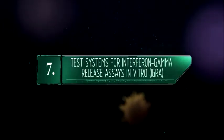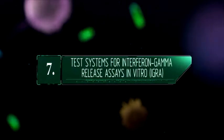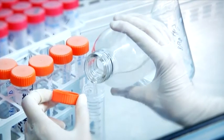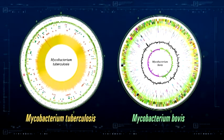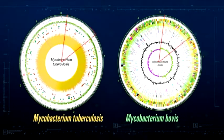Test systems for interferon gamma release called in vitro IGRA. The results of international studies which aim to interpret mycobacterium genome and detect region RD1 specific for strains of mycobacterium tuberculosis and mycobacterium bovis.